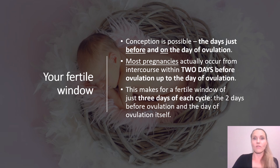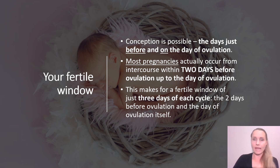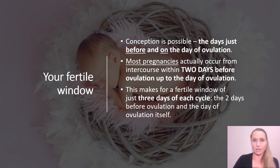This six-day window is comprised of the five days before you ovulate and the day of ovulation. Most pregnancies occur due to intercourse within two days before ovulation up to the day of ovulation. So you want to be timing intercourse within those two days before you ovulate and the day of ovulation — making for a fertile window of just three days. You really want to make sure you hit that window and get the sperm ready to fertilize that egg, because it's a very small window of opportunity.